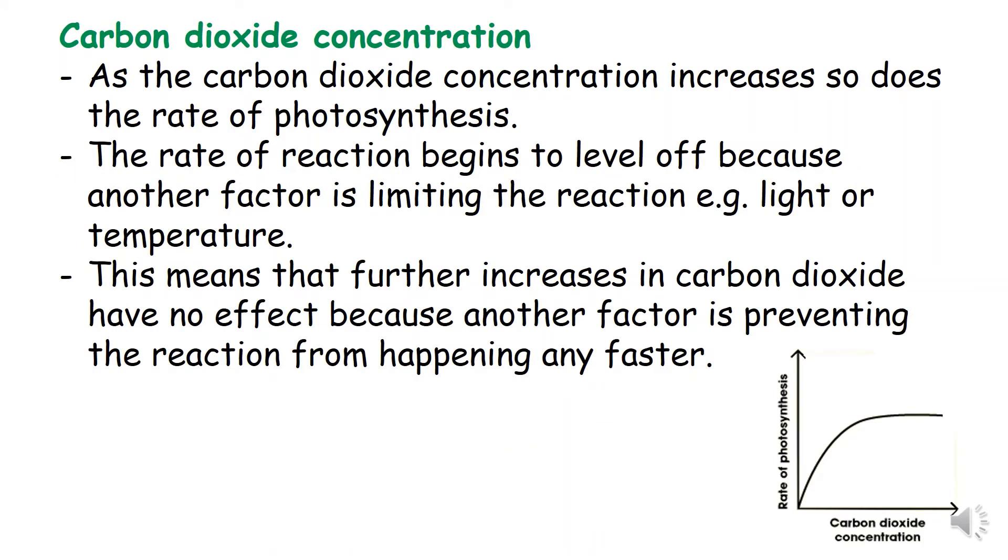The second factor we are going to look at is carbon dioxide concentration. As carbon dioxide level increases, the rate of photosynthesis also increases. However, the rate of photosynthesis stops increasing, again shown by the graph levelling off, because there is a limiting factor affecting the rate of photosynthesis which can be temperature, light intensity, or amount of chlorophyll in the leaf.